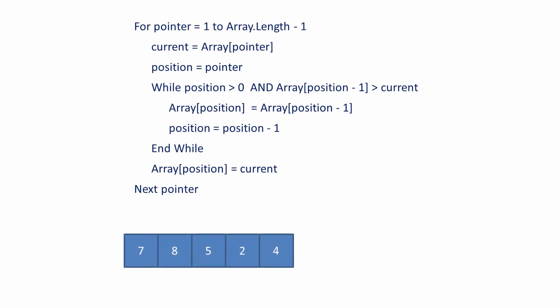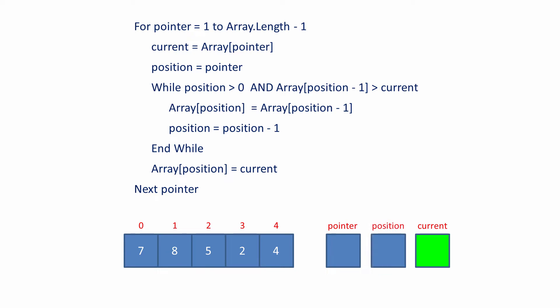Here's some pseudocode for sorting an array into ascending order using an insertion sort. It assumes we're using a zero-based array, which is typical of most programming languages. There's a variable called pointer, which is used to scan the array from left to right. There's another variable called current, which will store a copy of the array item given by the value of the pointer, and there's a variable called position. Position is given the value of pointer at the start of the outer loop. Let's see it in action.